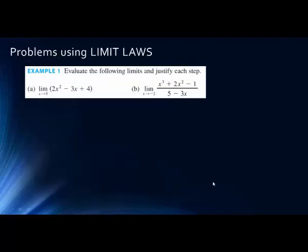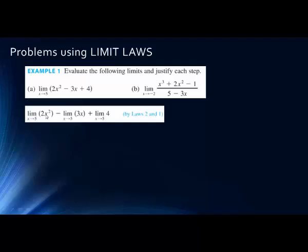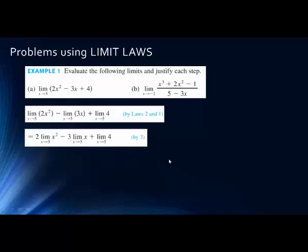Let's look at some problems using these laws and demonstrate them. First we have the limit of 2x² − 3x + 4. Notice we have a difference and a sum here, and we're allowed to take the limit of each of the parts — this is by laws 1 and 2, the law of a sum and the law of a difference. In the first term we have a constant times x², and in the second a constant times x, so we can pull those constants out in front. These are both by rule 3.